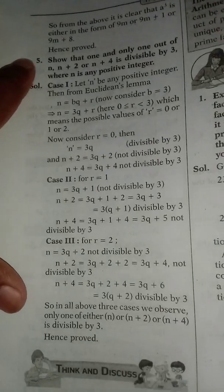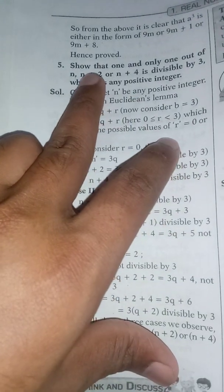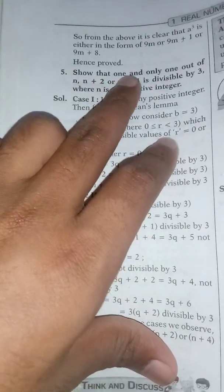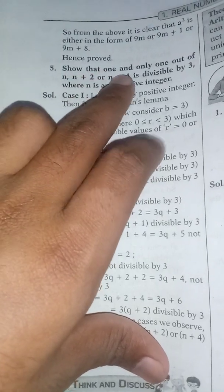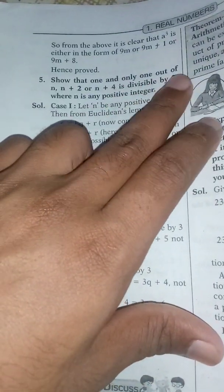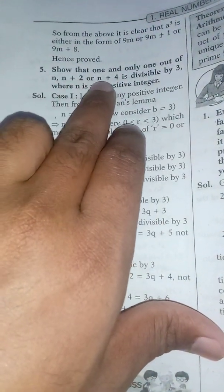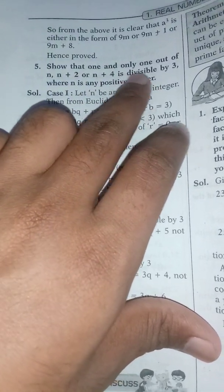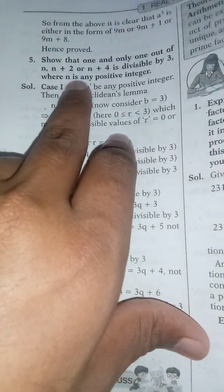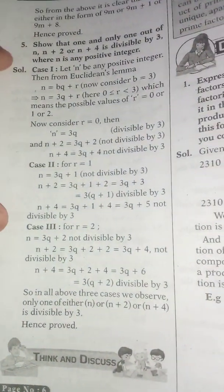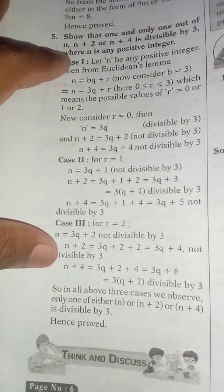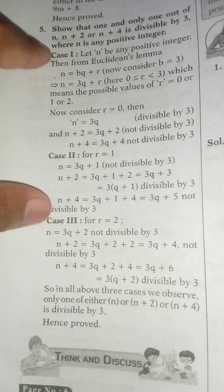I'll read the question: Show that one and only one out of n, n+2, or n+4 is divisible by 3, where n is any positive integer. In this solution there are three cases.